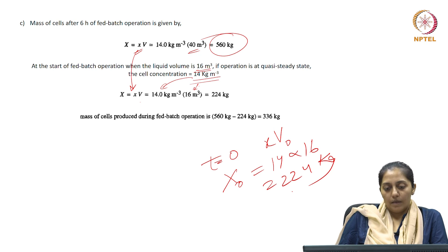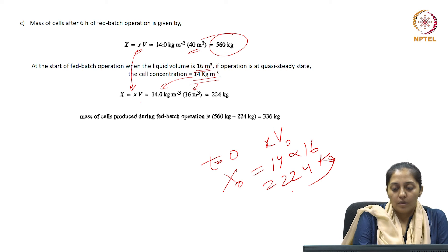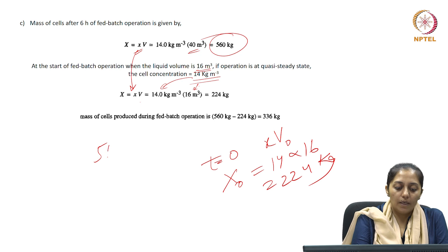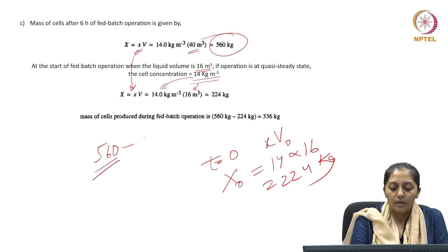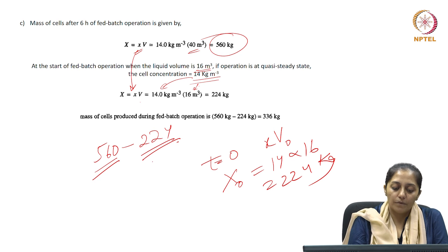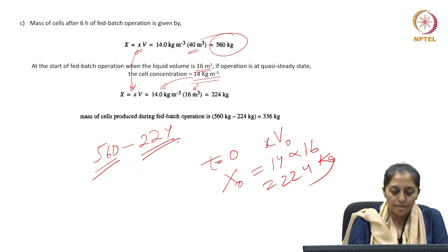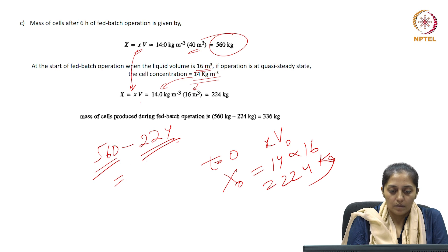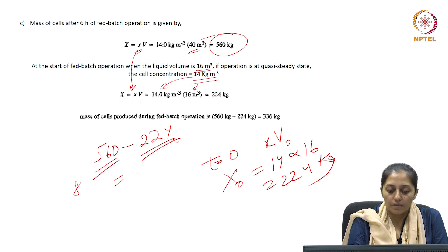The amount of biomass produced during this 6-hour fed batch run is the final amount minus the initial amount, which is 560 minus 224, giving 336 kg of biomass produced.